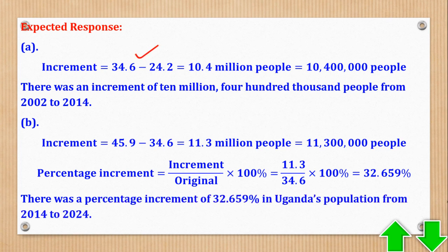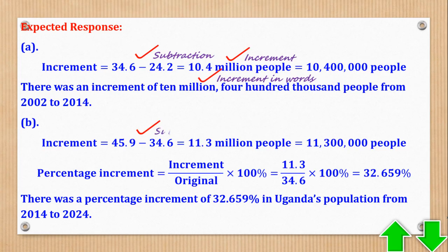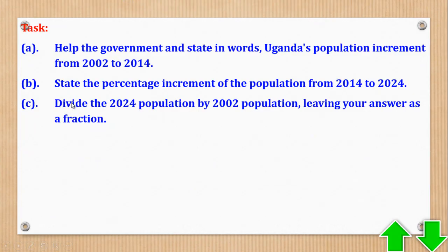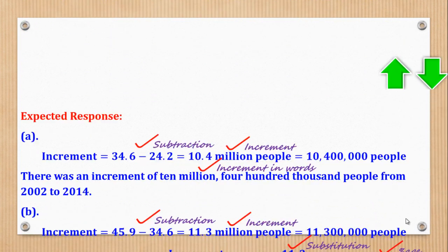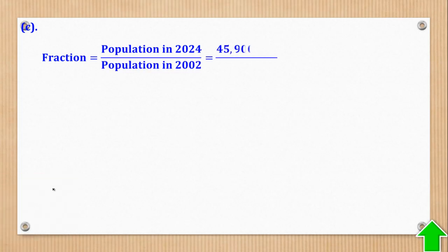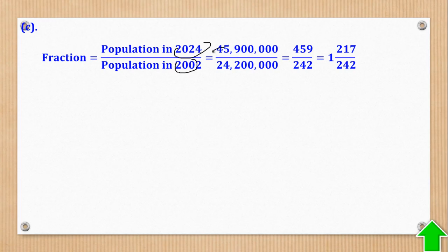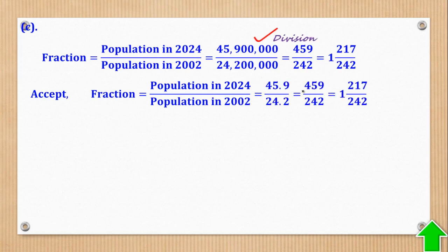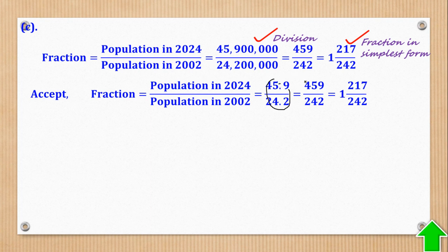Task C: divide the 2024 population by the 2002 population, leaving your answer as a fraction. The fraction is population in 2024 over population in 2002: 45.9 million over 24.2 million equals 459/242 or as a mixed fraction. You need to remove all the decimals, so both forms are acceptable.